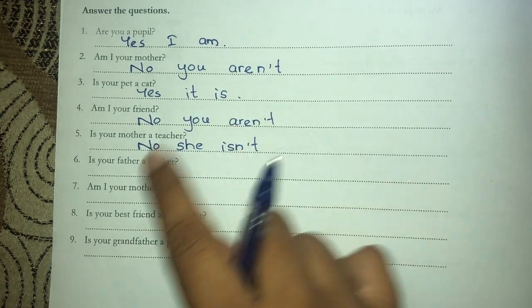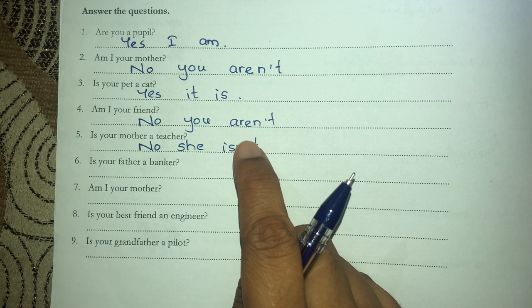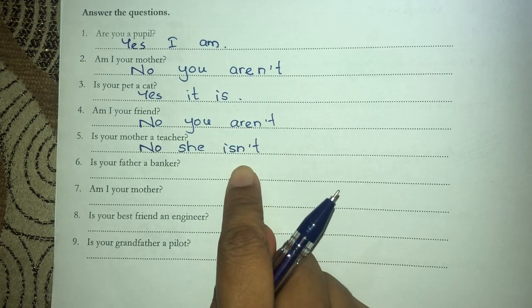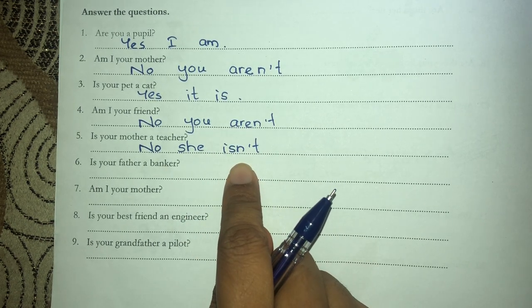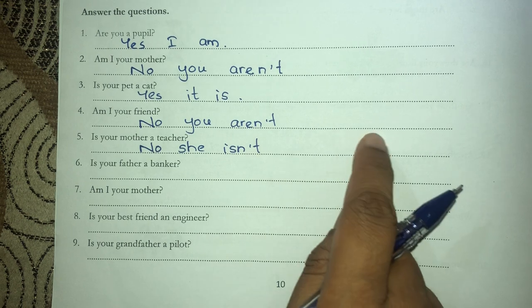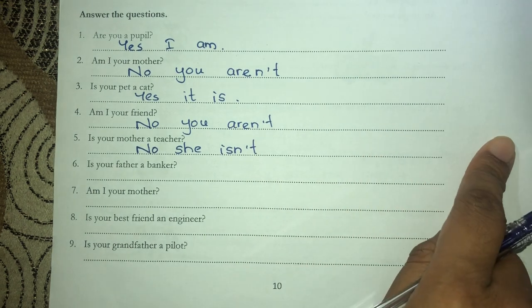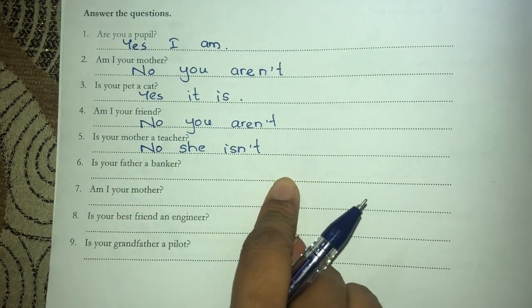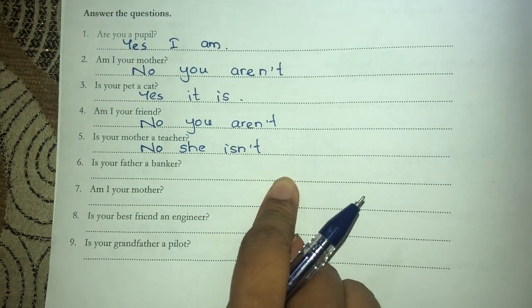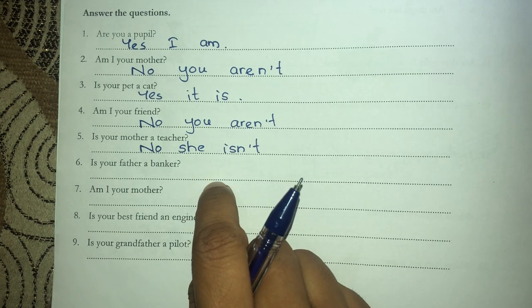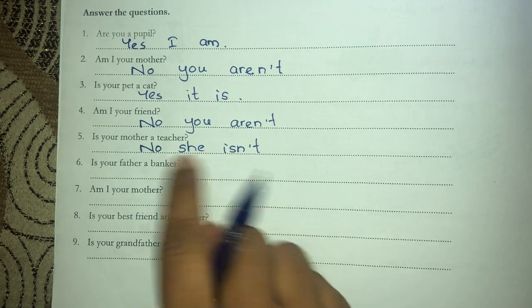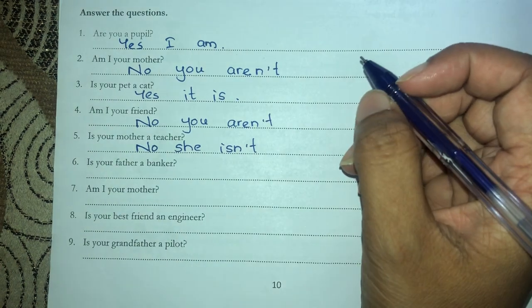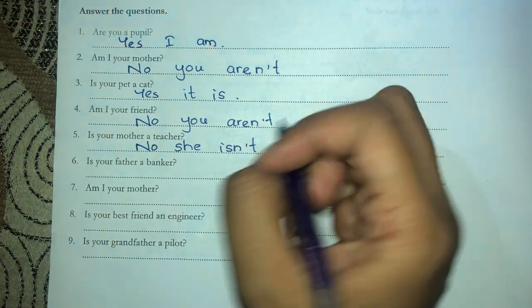That is all they expect in this grade - just write 'No, she isn't.' If you know the spellings you can say 'No, she is a banker,' but if you don't know the spelling you can write just 'No, she isn't' and still score full marks. You don't have to know all spellings - just know how to write this.